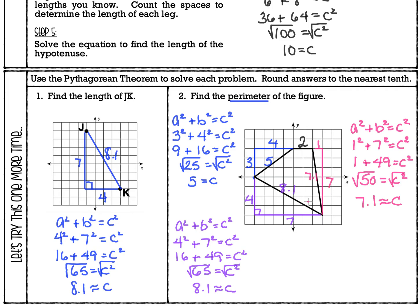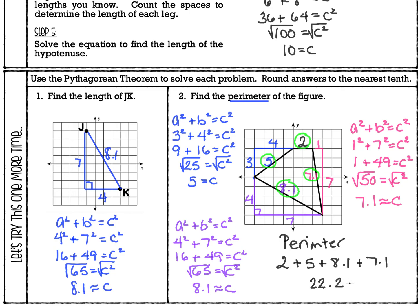Because we're finding the perimeter, we have to add all of the side lengths of this quadrilateral — all four sides. Our first side was 2, this side was 5, then we figured out 8.1, and then this last one was 7.1. So for the perimeter: 2 plus 5 plus 8.1 plus 7.1 equals 22.2. We'll call this units because we're not given a specific measurement — we don't know whether this is inches or centimeters, so we'll just say units since we're using a graph.